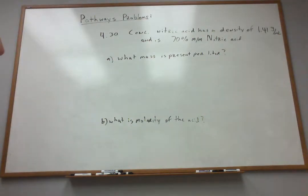So it's 70% by mass nitric acid. And it asks us then, what mass is present per liter of the nitric acid? So if I have 1 liter of this solution, what is the mass of the nitric acid that is present?